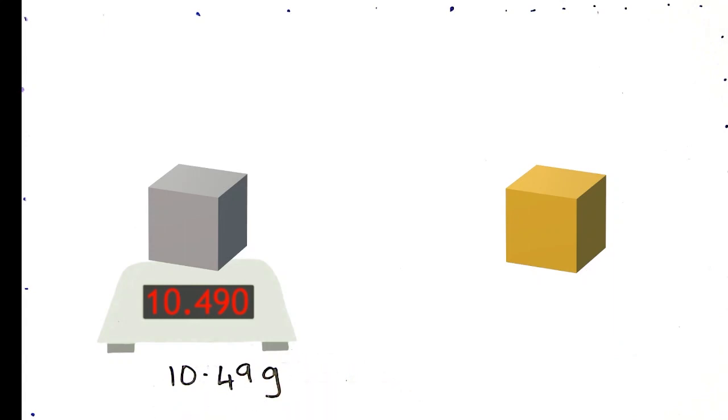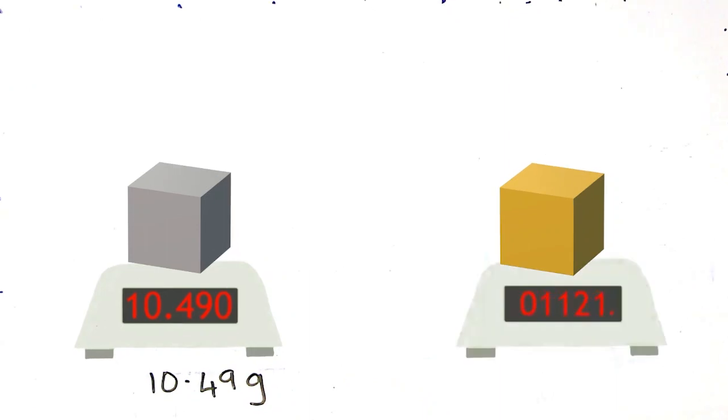And let's do the gold. You see that the gold weighs 19.3 grams. So although these cubes look exactly the same, the gold cube is nearly nine grams heavier than the silver cube.